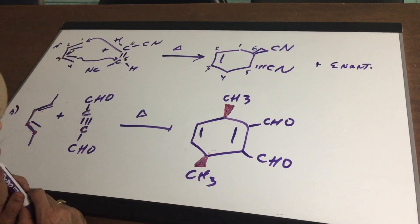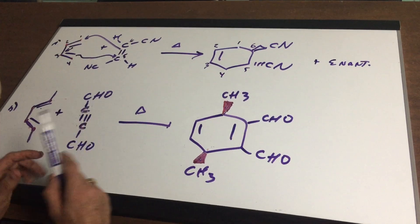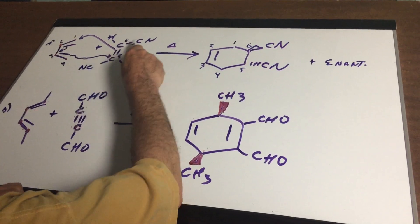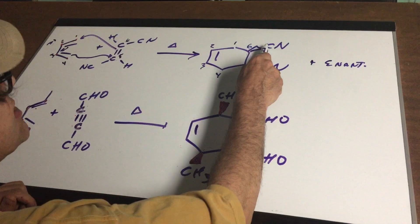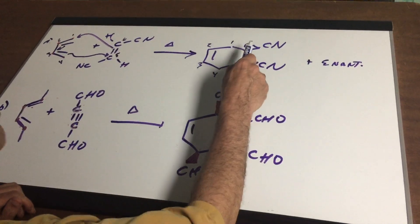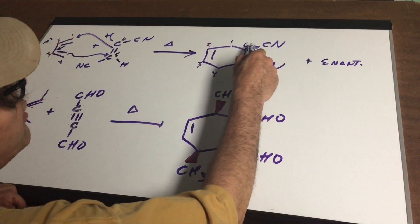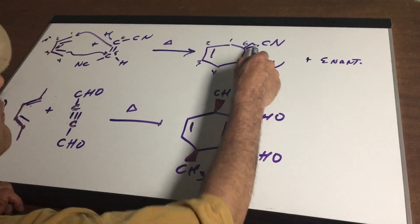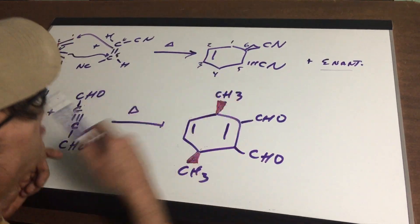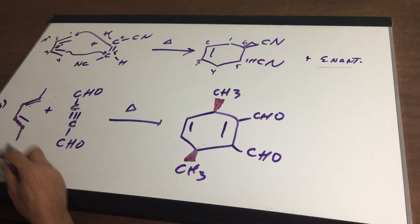This reaction is stereospecific and it's one step. That means that groups that were trans stay trans in the final product. So this would be a wedge and a dash, or you could have a dash and a wedge which would make the enantiomer. So I'll just write one of the pairs of the enantiomers.